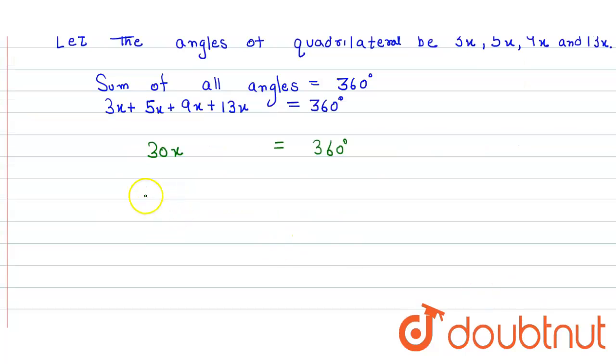So here the value of x is equal to 360 divided by 30. When it cancels we get the value of x is equal to 12.